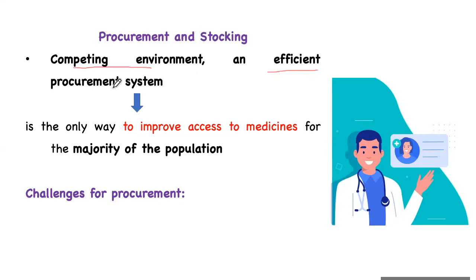In addition to that, the efficient procurement system also matters a lot. For example, competing stockists are available offering different discounts and services, but if your procurement system is not efficient — if you are running a chain store without a skilled person to take care of procurement — then you will not be able to meet the demand for medicine. People may come to buy medicine at your store, but due to the ineffective procurement system, the drug is not available. These are the challenges you may face without an efficient procurement system.